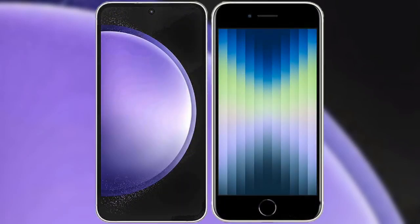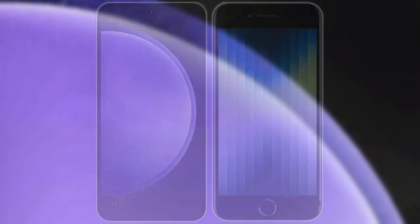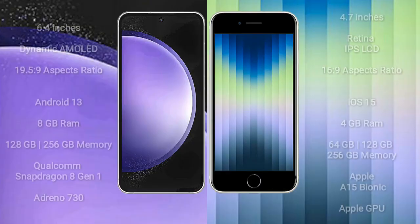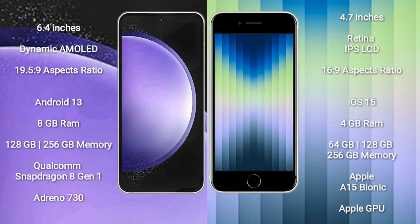I will compare the new Samsung Galaxy S23 FE with iPhone AC. Samsung Galaxy S23 FE comes with a 6.4-inch dynamic AMOLED display and aspect ratio 19.5:9. iPhone AC comes with a 4.7-inch retina IPS LCD and aspect ratio 16:9.